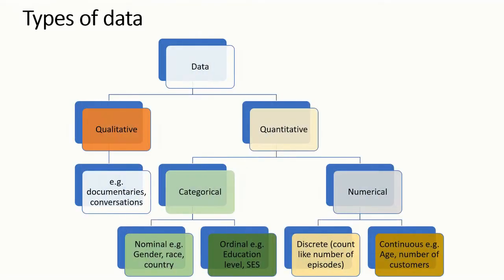So what are the types of data? We have qualitative and quantitative. We shall not look at qualitative right now but we shall look at it at some time. We are going to focus on the quantitative — these are numbers. Under quantitative, we have categorical and numerical. Numerical are numbers.